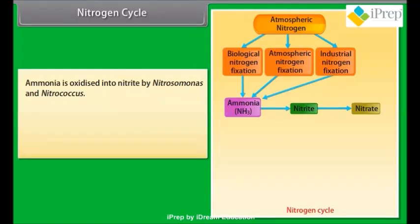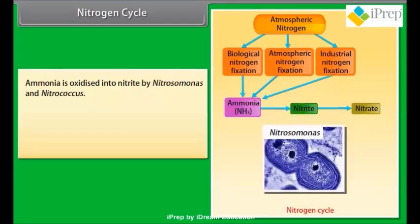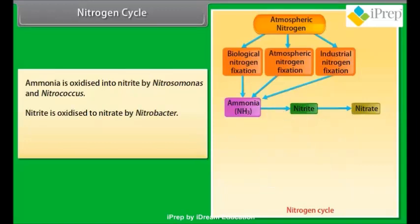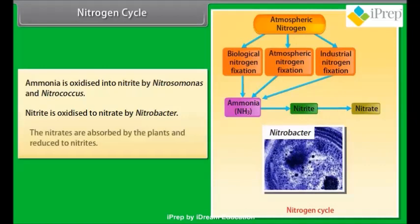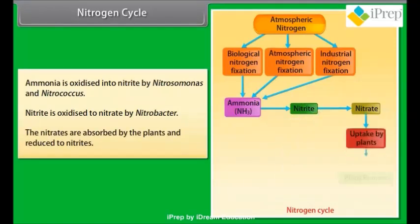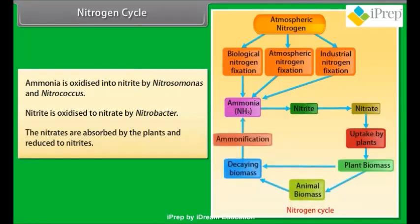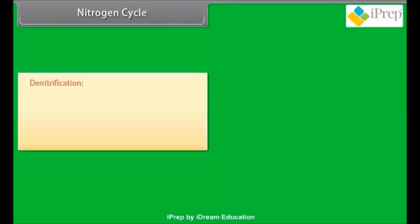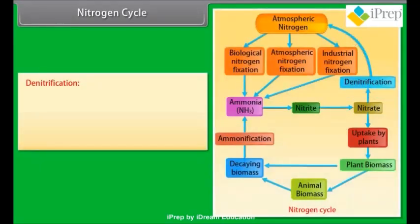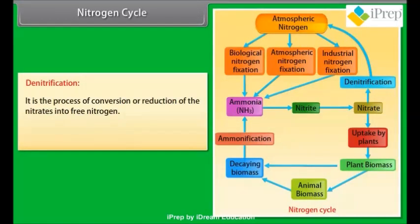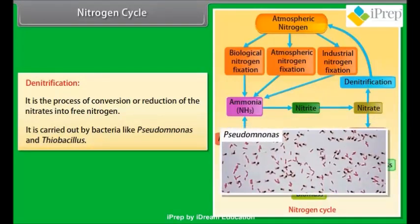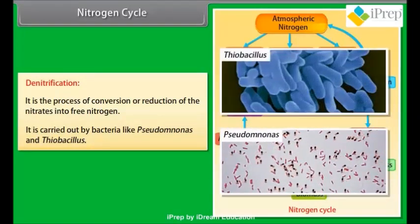Ammonia is oxidized into nitrite by Nitrosomonas and Nitrococcus. Nitrite is oxidized to nitrate by Nitrobacter. The nitrates are absorbed by plants and reduced to nitrites. Denitrification: it is the process of conversion or reduction of nitrates into free nitrogen, carried out by bacteria like Pseudomonas and Thiobacillus.